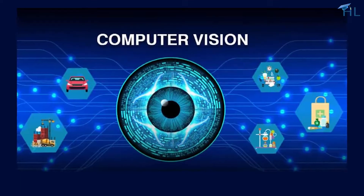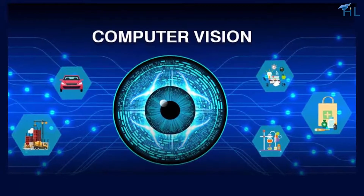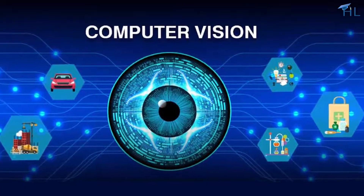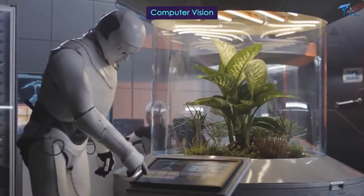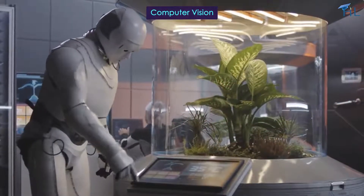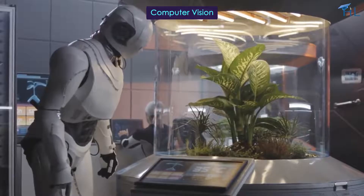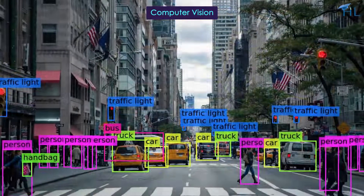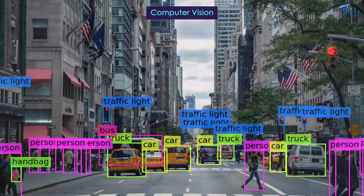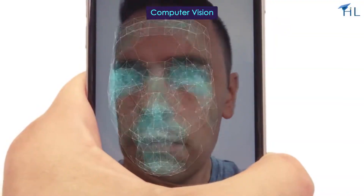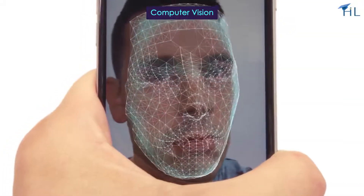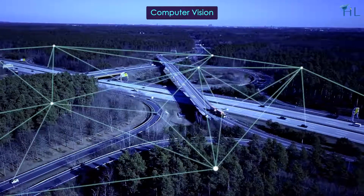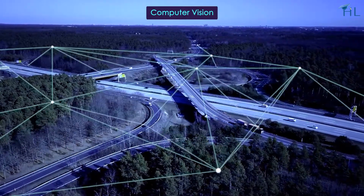Next, there's computer vision. Computer vision allows machines to understand visual information from the world, like recognizing objects or interpreting scenes. For example, computer vision can help cameras recognize faces, or even help self-driving cars understand the road.